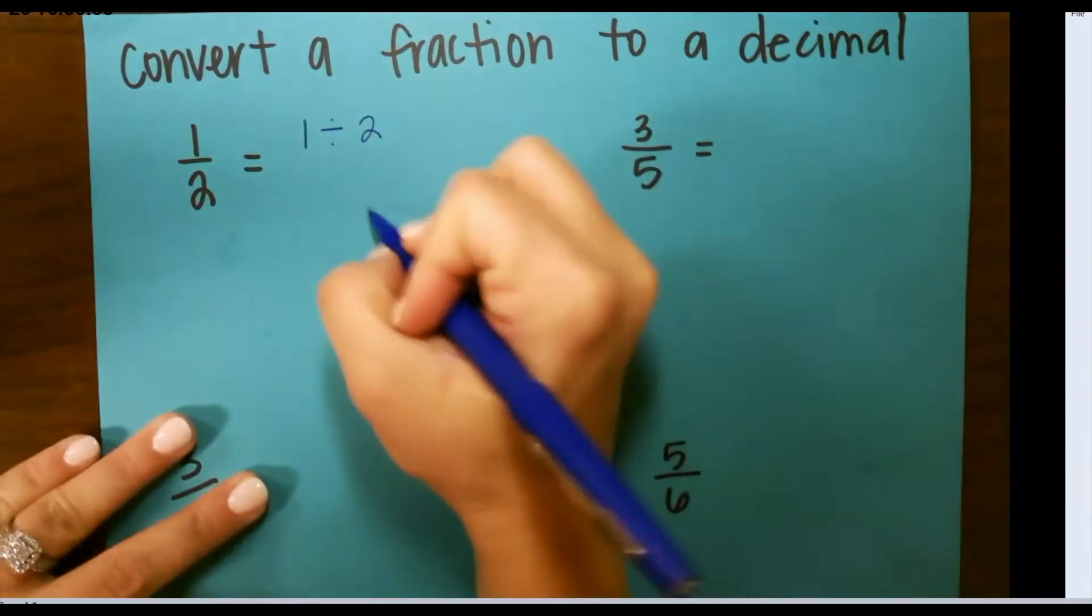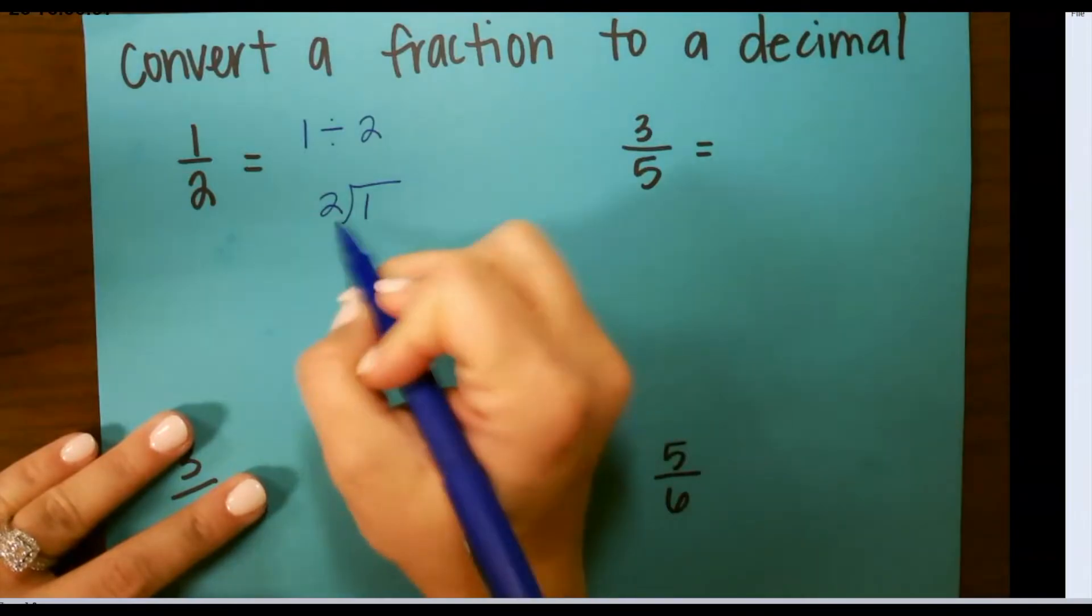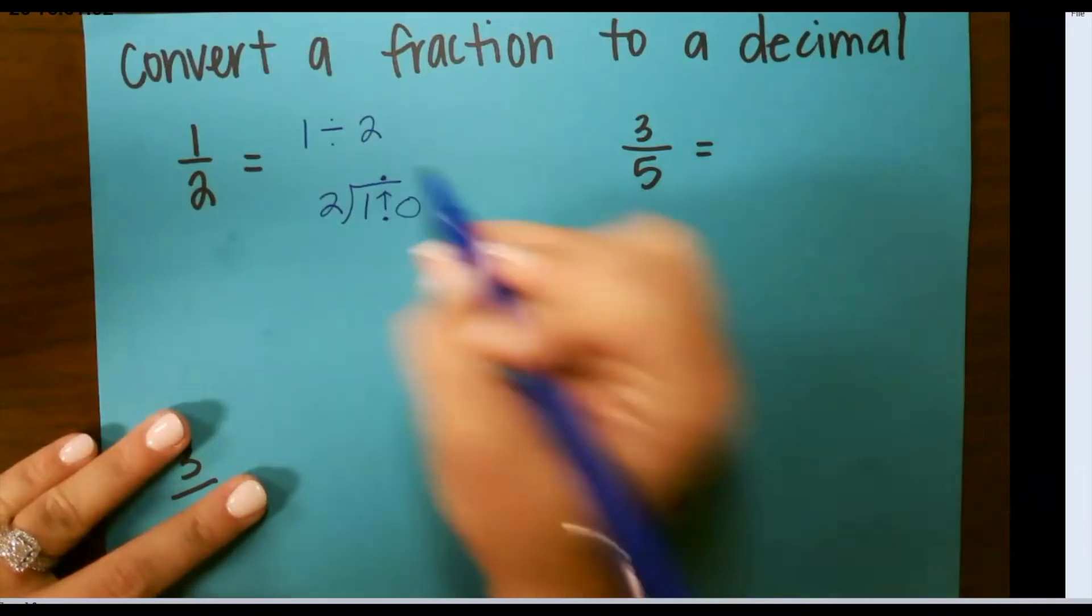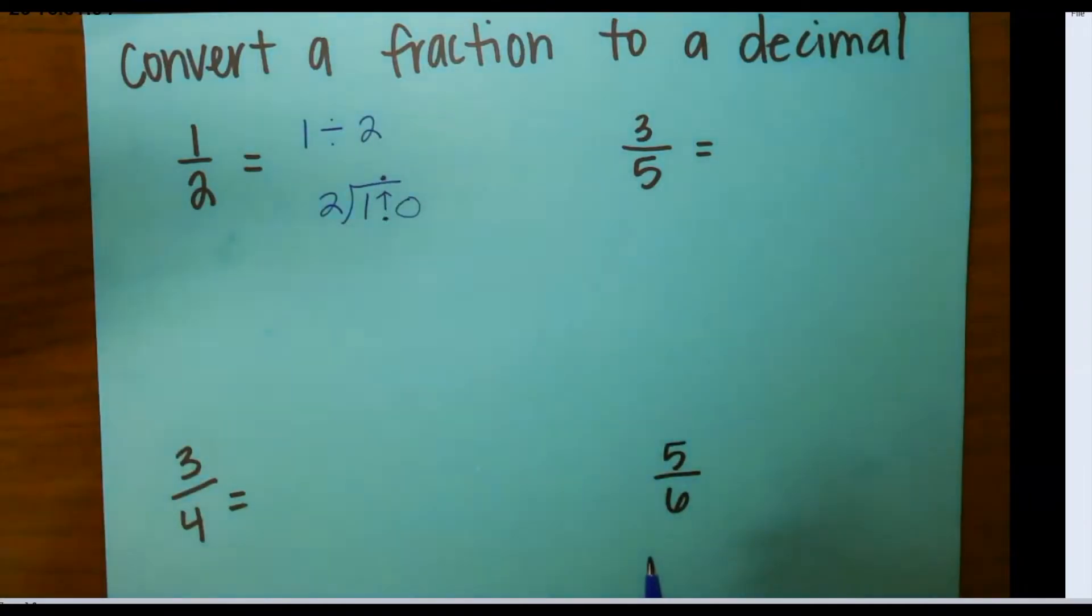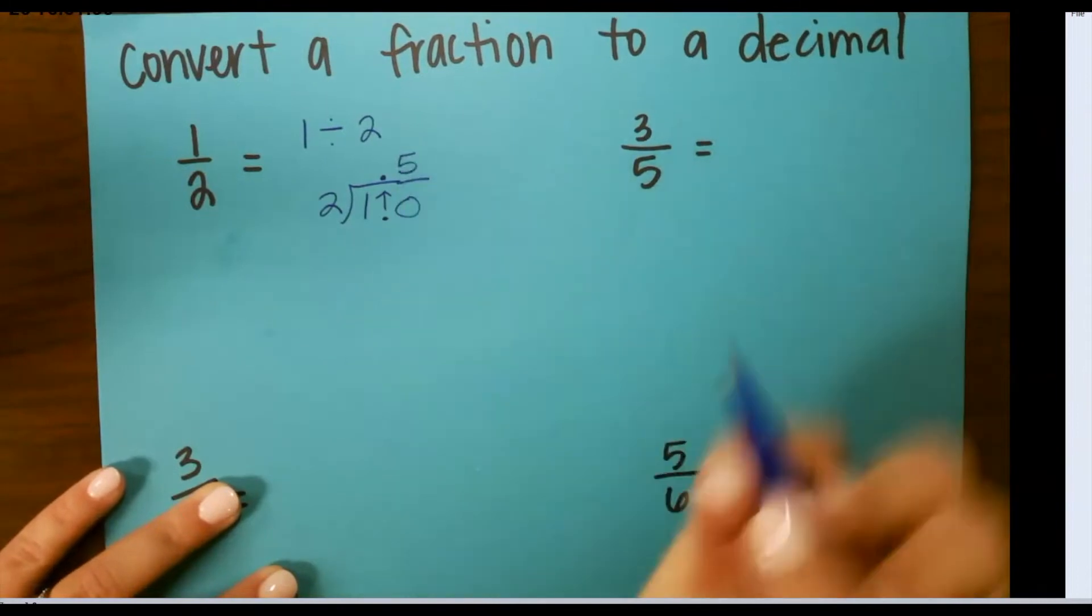So we're going to do 1 divided by 2. Since 2 cannot go into 1, I need to add a decimal and a 0 and take our decimal straight to the top. 2 can now go into 10 5 times.